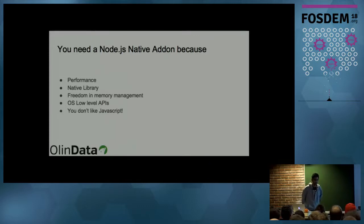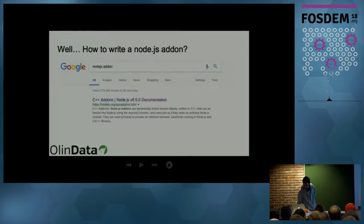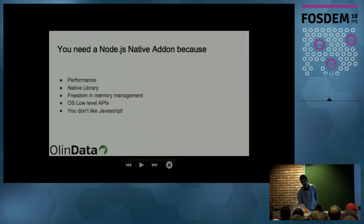So you need a Node.js add-on. It's kind of fast. Because you might need more performance in Node.js, or you have a native library that you want to be used in different languages, for example Ruby, Python, and then you write bindings for that library of yours. Or you want more freedom in memory management. Or you might even want to use some low-level APIs in your application, and in Node.js you just can't without the proper binding. Or you don't even like JavaScript, but that's not a good reason.